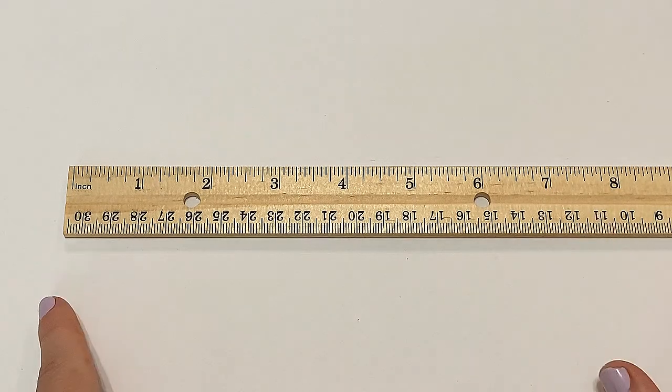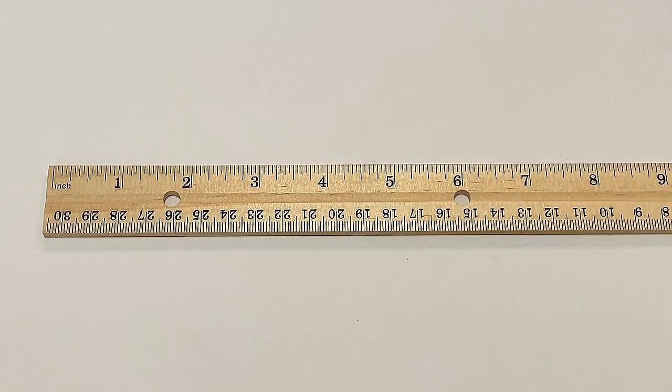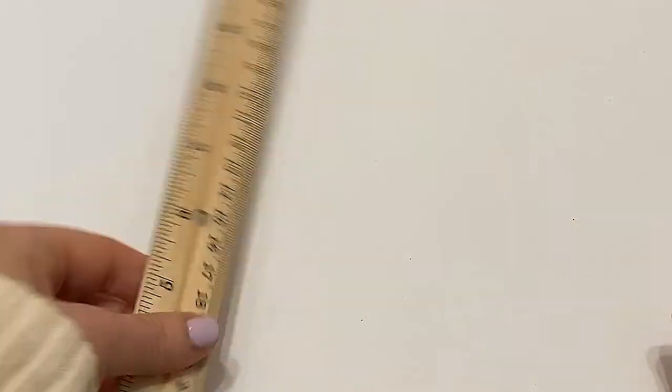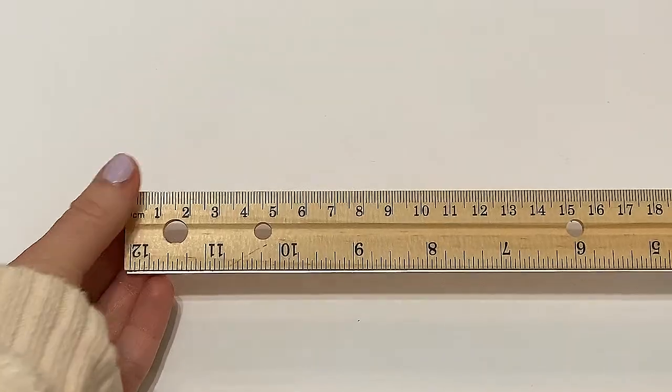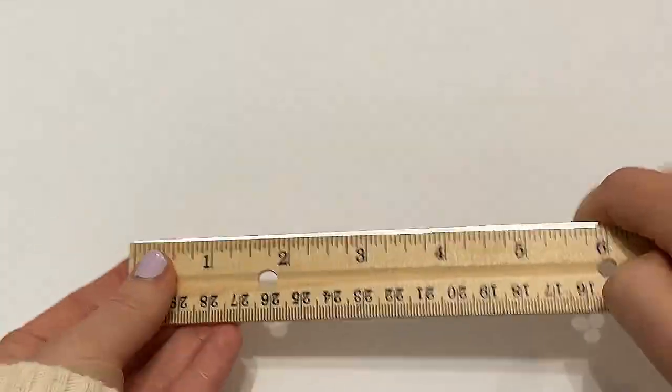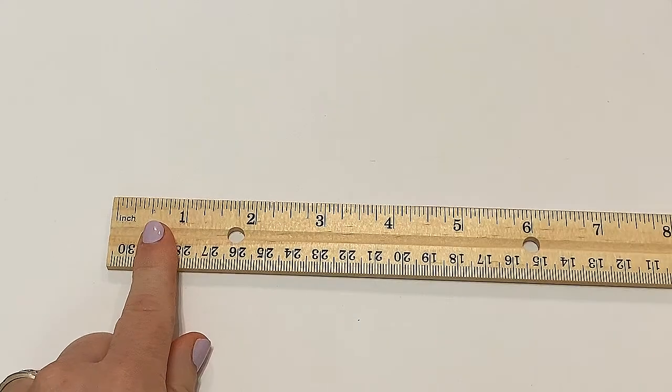And when we're measuring with our ruler we always want to make sure that we are measuring with inches. Notice that this ruler has inches but it also on the other side has centimeters. Centimeters are much smaller than inches so I need to make sure when I'm measuring I start with my inches.